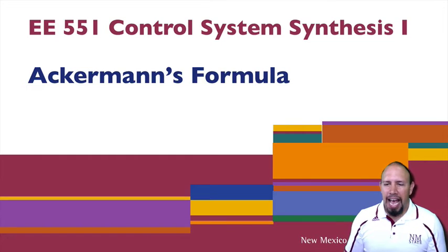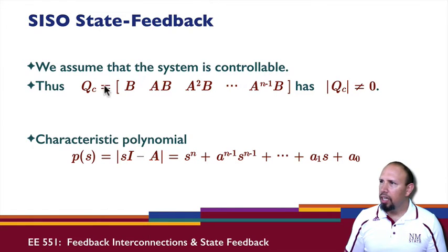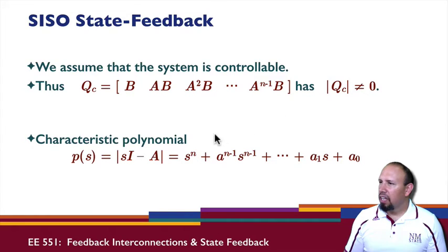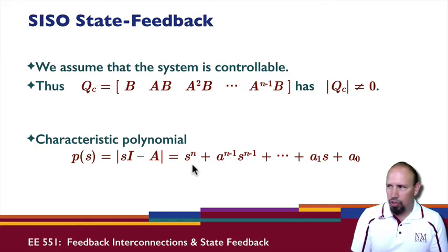We're going to talk about Ackermann's formula. In Ackermann's formula, we start with the controllability matrix. We're assuming the system is controllable, so we can use Ackermann's formula. The controllability matrix for a single-input system is square and non-singular. The characteristic polynomial of our system is given by this expression, so the A values are the coefficients of the characteristic polynomial.